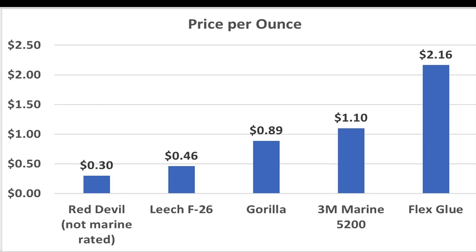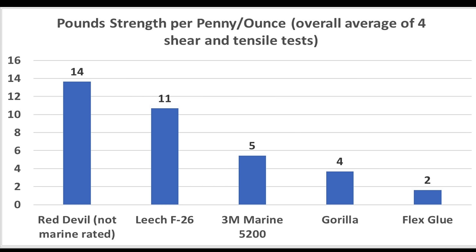While 3M costs more, in a moment we're going to see that it's actually a very good value when you consider its performance. Regarding the price of Flex, it definitely seems overpriced. While 3M performs quite a bit better than F-26, it's quite a bit more expensive. F-26 delivered 11 pounds of holding strength per penny compared to 5 pounds per penny for 3M. While 3M is expensive, when you consider its strength, it's a better value than both Gorilla and Flex.